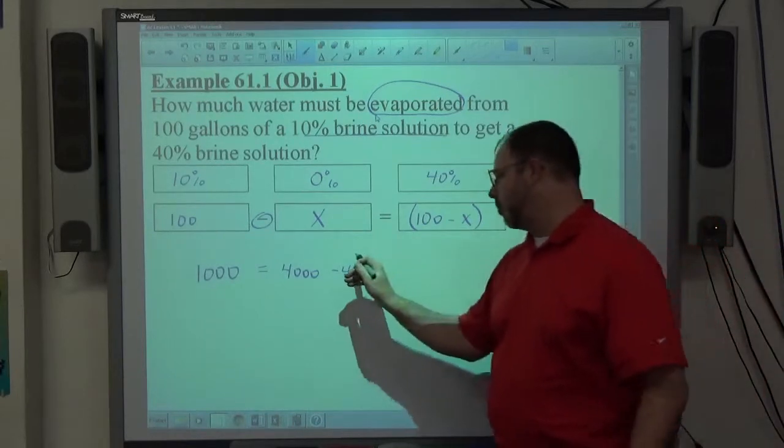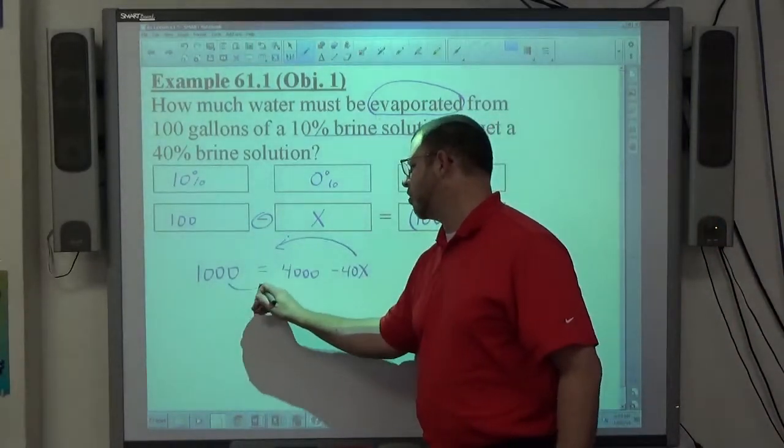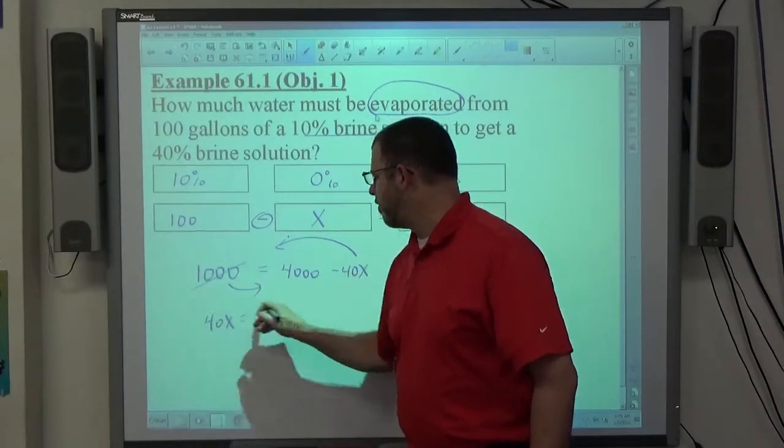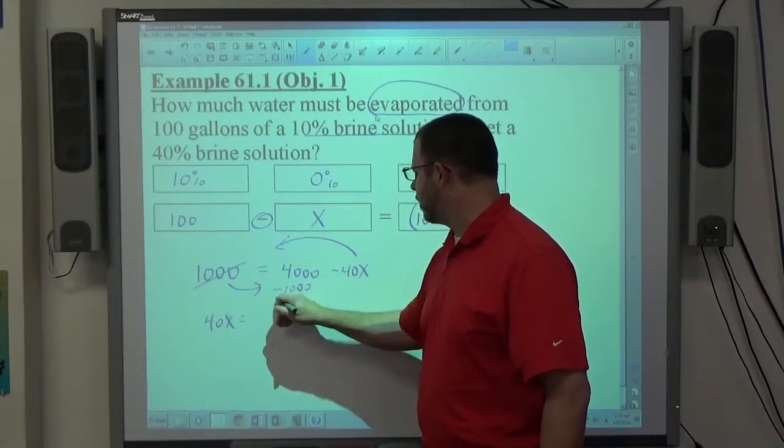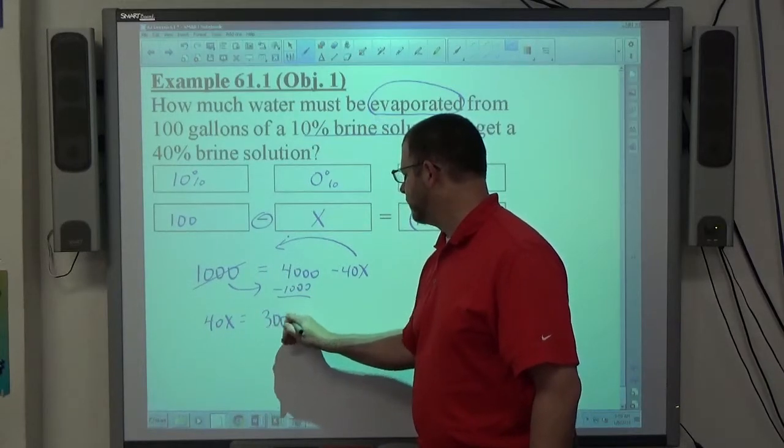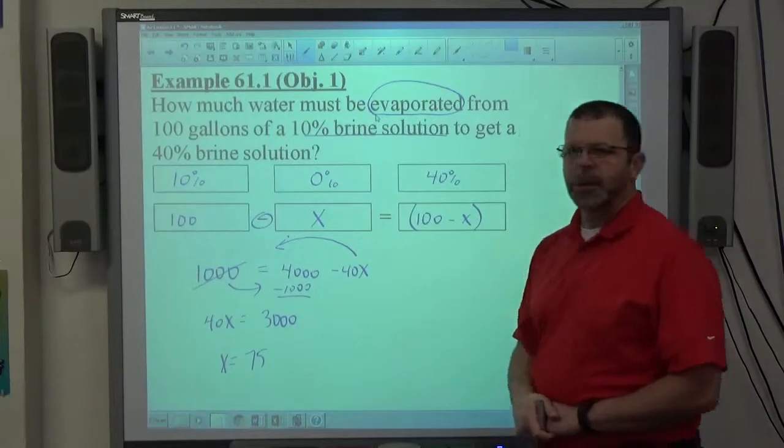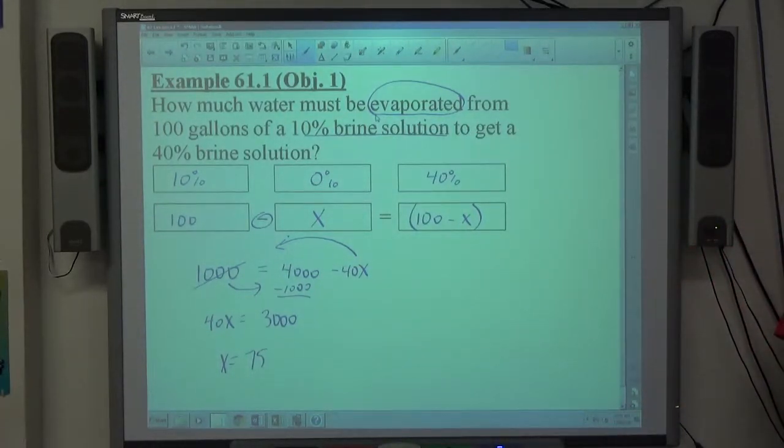I like my X as positive, so I'm going to move the 40X over to the left. I'll move the 1,000 over to the right. So positive 40X. I'm going to move the 1,000 over. It's going to subtract, so we're going to get 3,000. Okay, and we end up with X equals 75. Divide by the 40, you get 75.